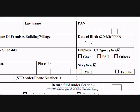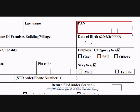Write your permanent account number. Make sure that it is exactly as it appears on your bank card. Then write your date of birth. Also mention whether you work for the government, PSU, or for a private organization. Also mark your gender.